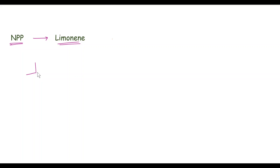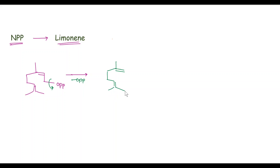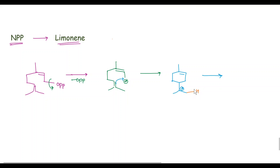Next we will see the synthesis of limonene from NPP. First we write down the structure of NPP. In the first step, loss of OPP takes place and we get a carbocation. In the next step, the pi bond attacks on this electron-deficient carbon atom and we get a six-membered ring with a tertiary carbocation and a double bond. In the next step, loss of H+ takes place and we get limonene with two double bonds.